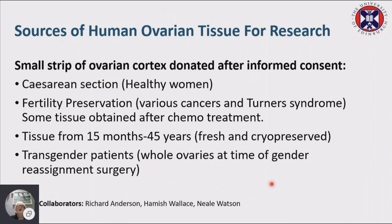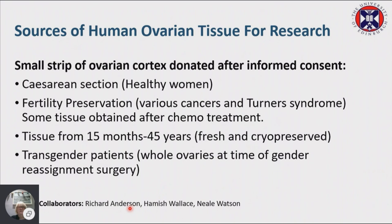We work with ovarian tissue that comes from healthy women at the time of cesarean section, from fertility preservation patients with various cancers and tumor syndromes, and from chemotherapy-treated tissue. We have a range of ages from very young — 15 months — to 45 years. We can look at freshly isolated tissue and compare it to cryopreserved tissue. We've also recently been working with transgender patients, where we have whole ovaries during their gender reassignment surgery.